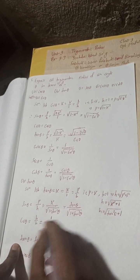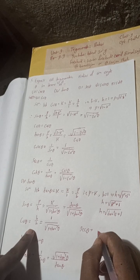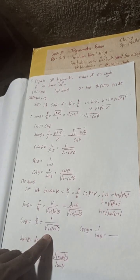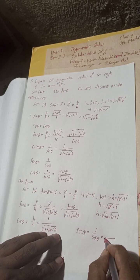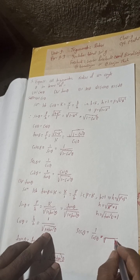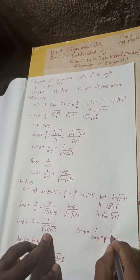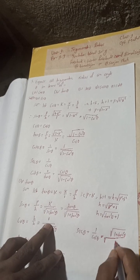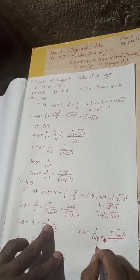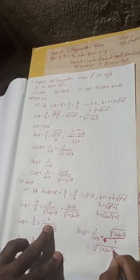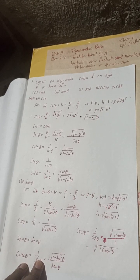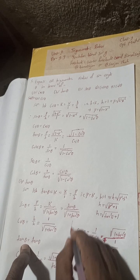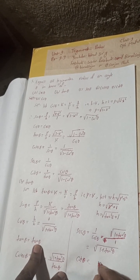Sec theta = 1/cos theta = √(1 + tan²theta). And cot theta = 1/tan theta, which is the reciprocal of tan theta.